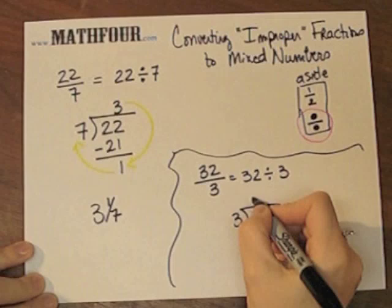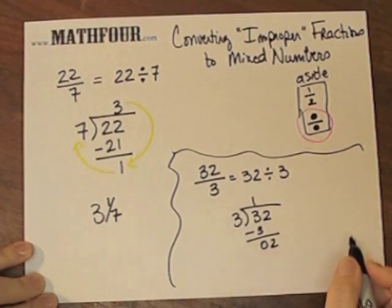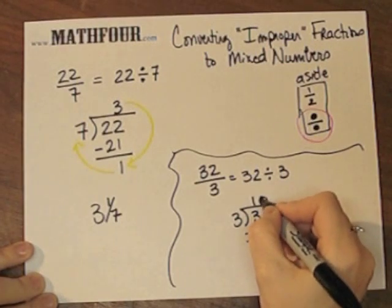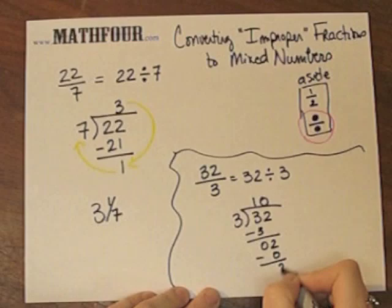3 goes into 3 one time. And then multiply. Just go ahead and do the long division part. 3 goes into 2 no times. So just for fun, do the rest.